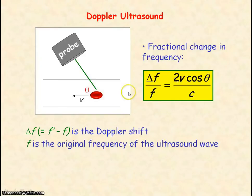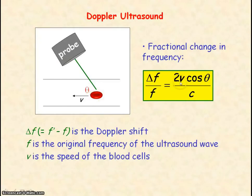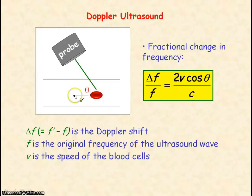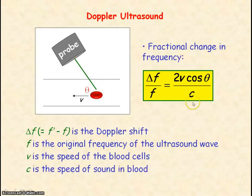V represents the speed of the blood cells. The term V cos theta is used, where theta is the angle between velocity V and the direction of the ultrasound wave. So V cos theta represents the velocity component of the blood that is parallel to the direction of the ultrasound wave. C is the speed of sound in blood — not c the speed of light.